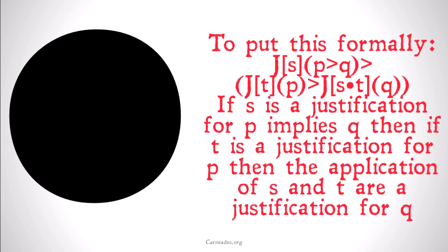To put this more formally: for all S, P, Q, and T, if S justifies P implies Q, and T justifies P, then the application of S and T justifies Q. If S is a justification for P implies Q, and T is a justification for P, then the application of S and T is a justification for Q.